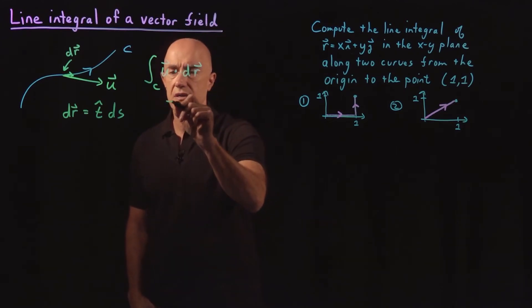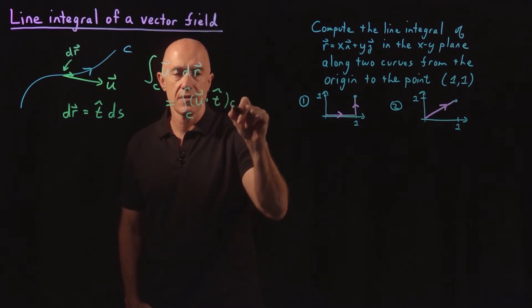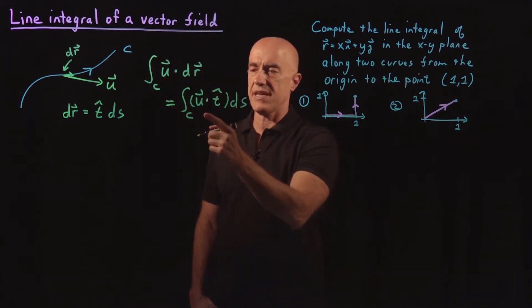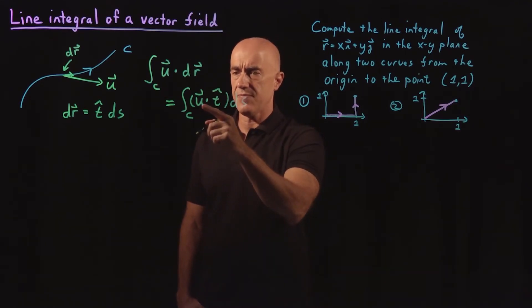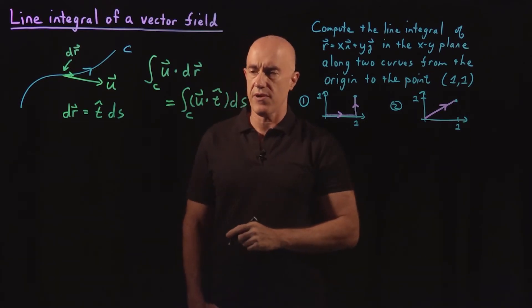Then this integral becomes the integral over the curve where DR now is T hat DS. So it's U dot T hat times DS. And that's just the line integral of a scalar field. But here the scalar field is our vector field dotted into the tangent unit vector to the curve.